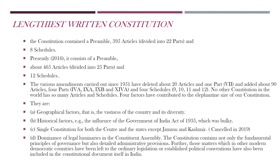Our Indian Constitution is the lengthiest written constitution. Originally it had 8 schedules, 395 articles, and was divided into 22 parts. Currently it has 12 schedules, and has grown to around 465 articles divided into 25 parts.